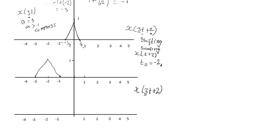Since we're done with shifting, we now perform scaling. We originally have 3 in X(3t+2), so we scale by 3. Because a is still greater than 1, we compress: we divide the limits — minus 1 and minus 3 — each by 3. Dividing minus 1 by 3 gives minus 1/3.